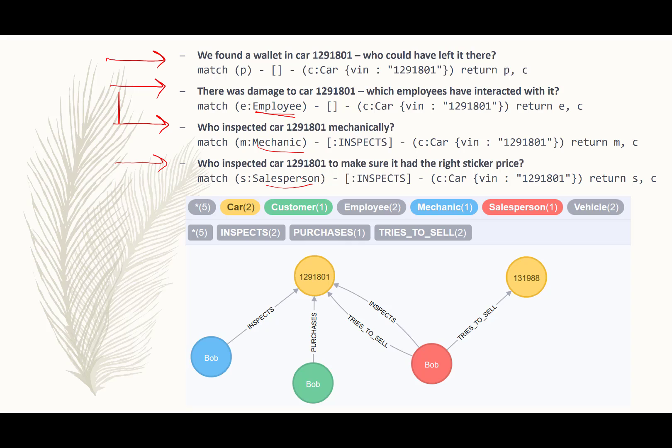And this is how you would model ternary relationships and inheritance in Neo4j. Thanks for watching.